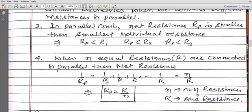Now if equal resistances are connected — if all resistances have the same value R and are connected in parallel — then 1/Rp = 1/R + 1/R + 1/R ... n times, which gives n/R. Taking the reciprocal, Rp = R/n. So for n equal resistances in parallel, the equivalent resistance is R/n.